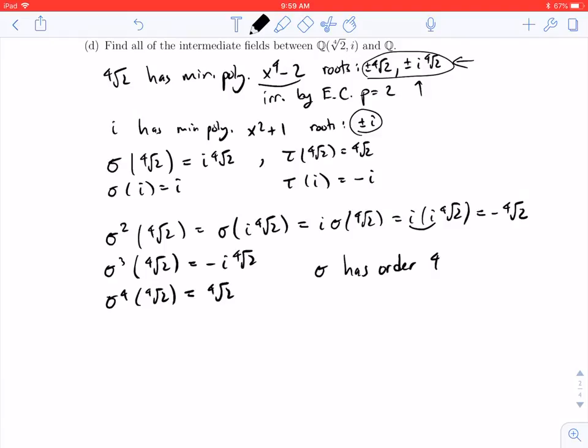And so now, recall, there are going to be eight possibilities for Galois automorphisms. Namely, I get the 4 where I send the fourth root of 2 to one of the roots of x to the fourth minus 2 and I fix i. And then the other four where I again send the roots of x to the fourth minus 2 to any other root of x to the fourth minus 2, but I send i to minus i, which just amounts to applying a tau at the end.